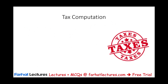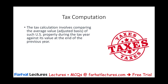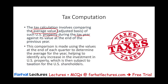How do we perform the tax computation? The tax calculation involves comparing the average value — the adjusted basis — of U.S. property during the tax year against the value at the end of the previous year. We look at the adjusted value of the property in year one versus year two. This comparison is made using the value at the end of each quarter to determine the average for the year, helping identify any increase in the investment in U.S. property, which is then subject to taxation for the U.S. shareholder.